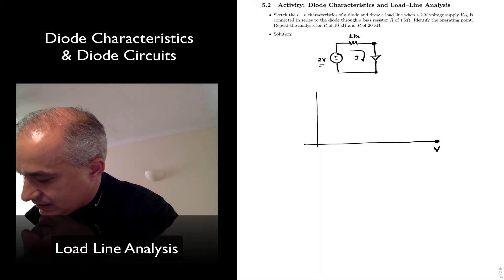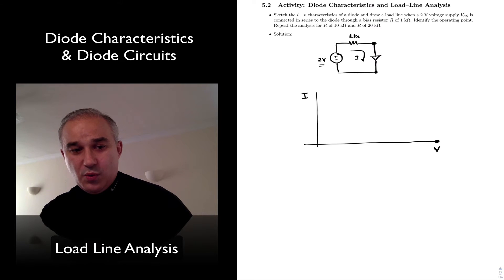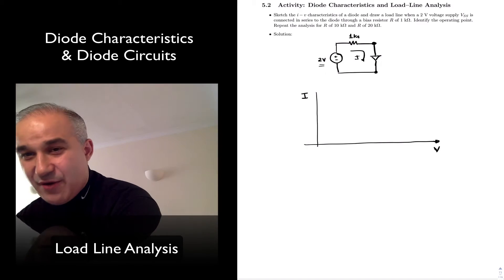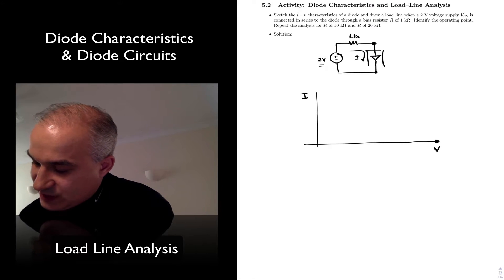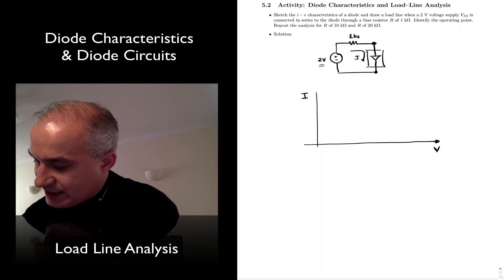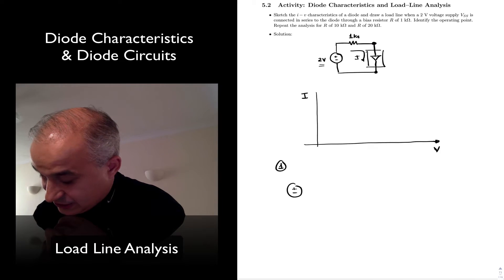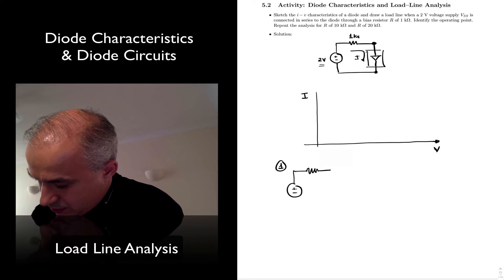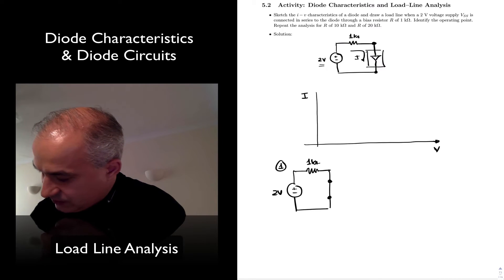We are going to look at the voltages and currents in the circuit. The first thing we are going to do is find the maximum current and the maximum voltage in this circuit when you take out the nonlinear device. So in step 1, we assume that the device is a short, and that will give us the maximum current. The voltage across the device in this case is 0.